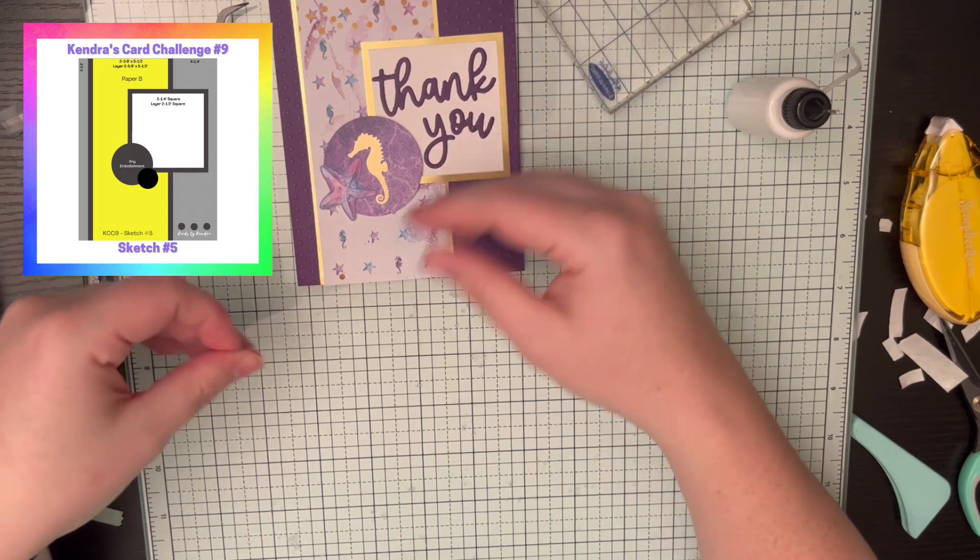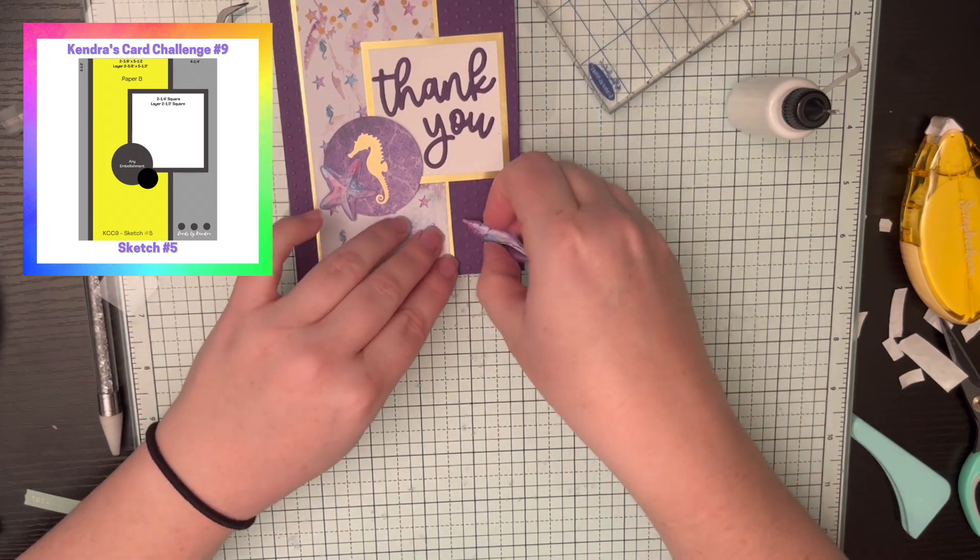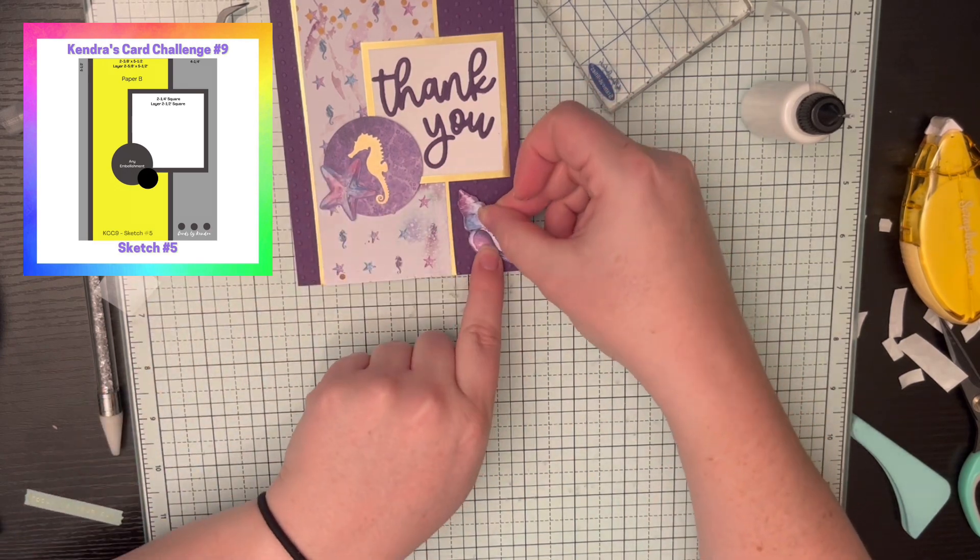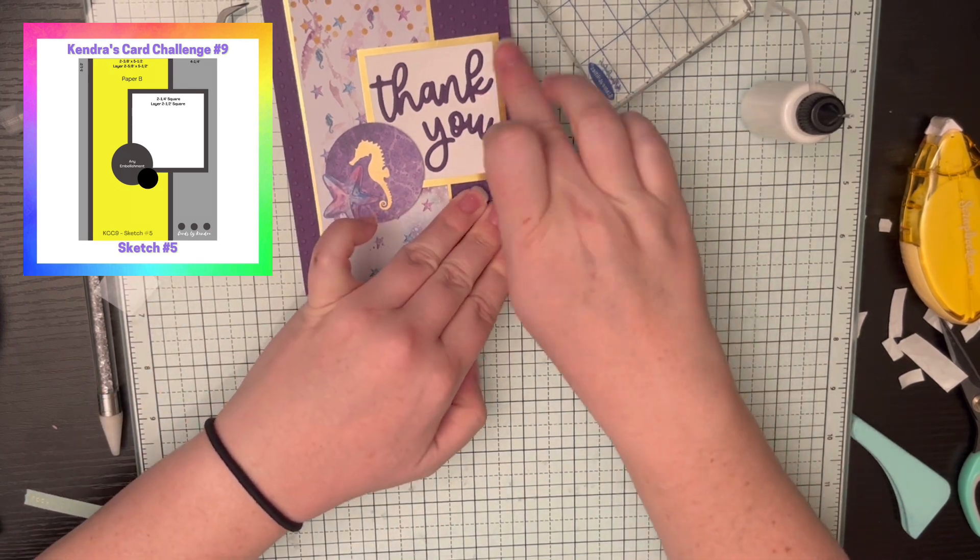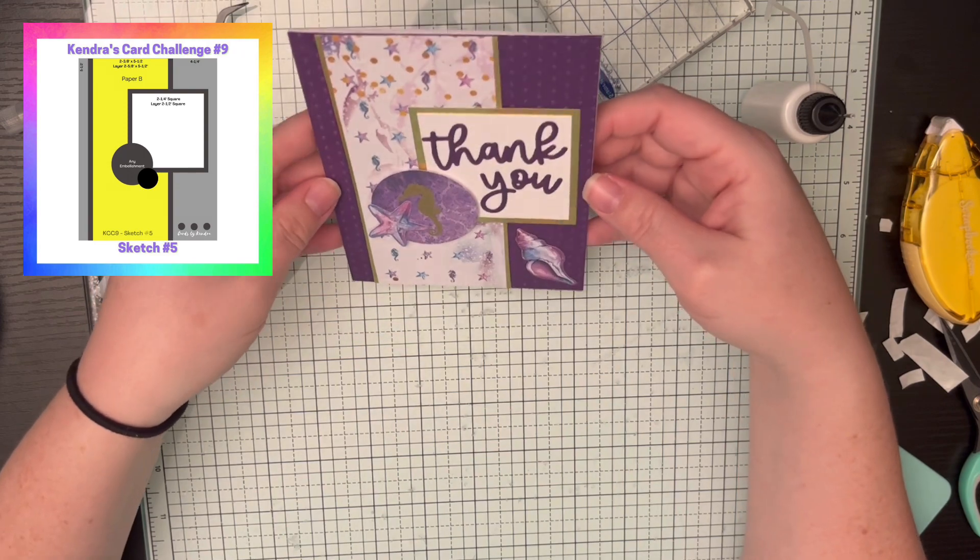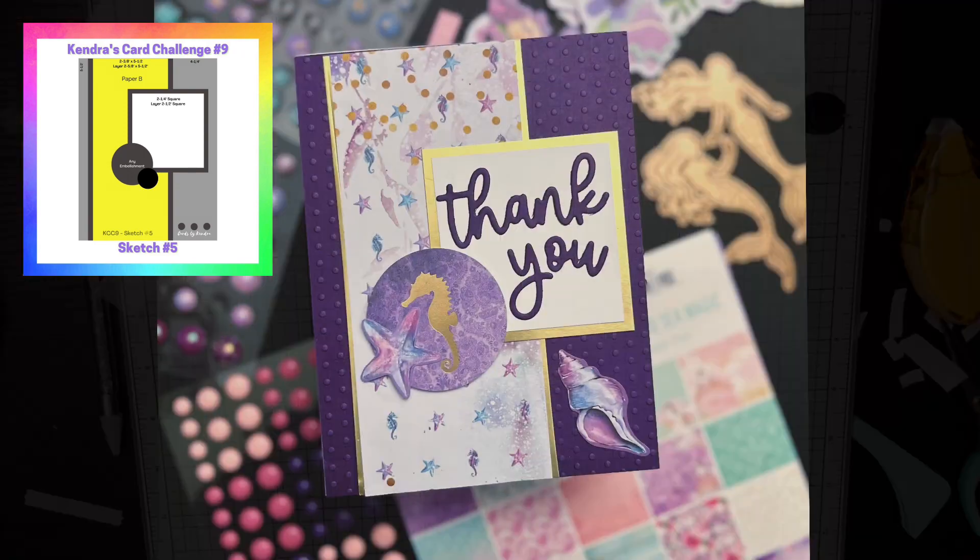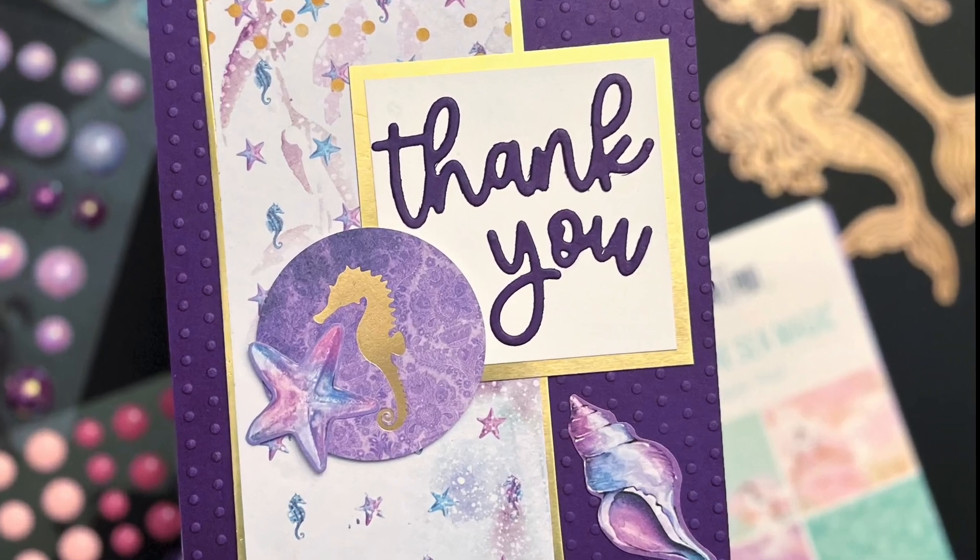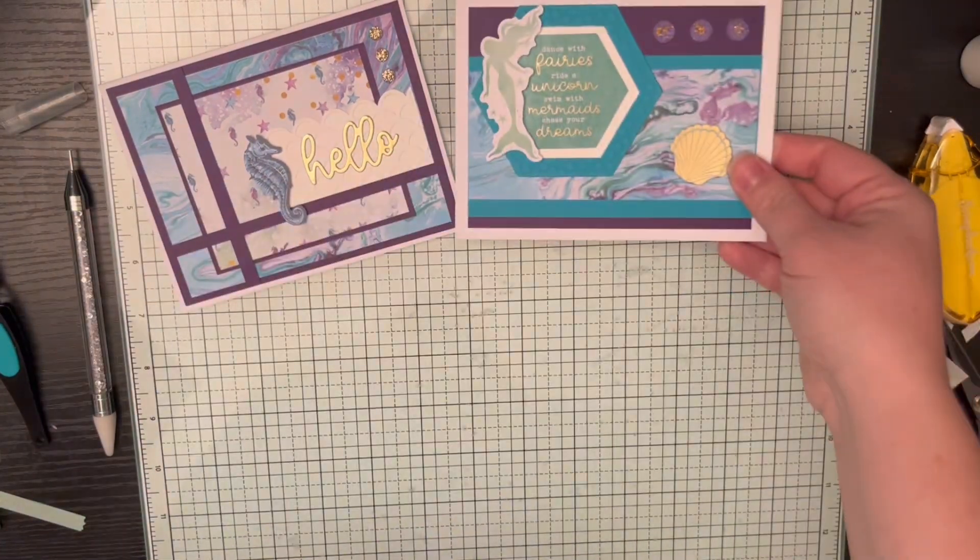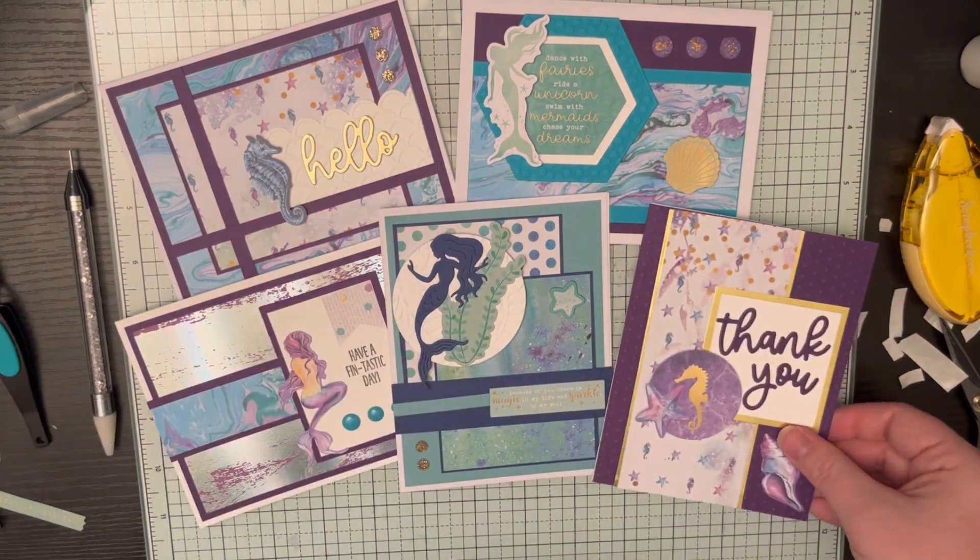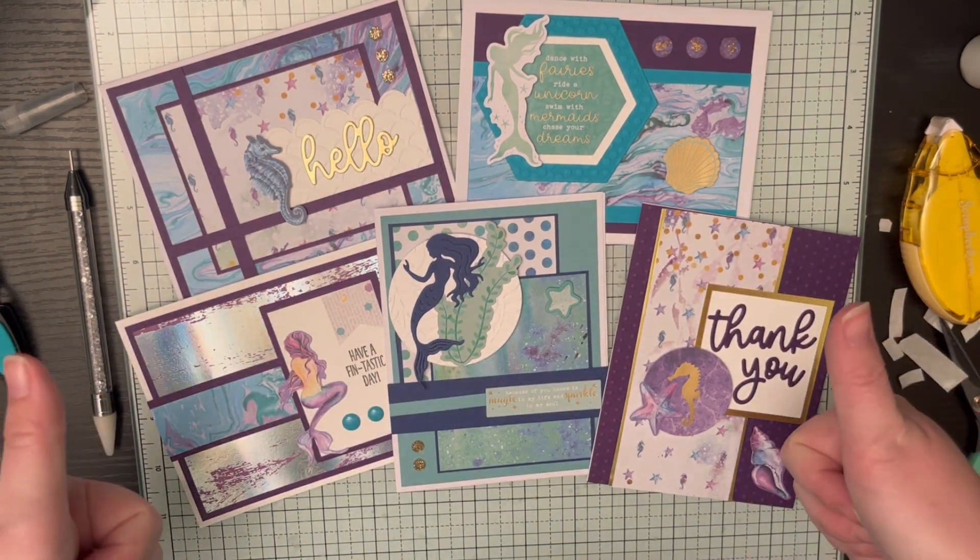Really use up the die cuts that came with the kit. Even though we created 15 cards in these next three videos here. I still have a ton of those die cuts left over. And like I said, I only used six sheets of the paper pad. And it's a 24-page paper pad. So lots to go. And these are all five of those cards. Like, subscribe, and continue watching for part two and part three. Thanks, guys. Have a good night.